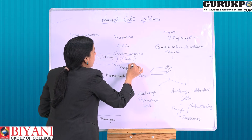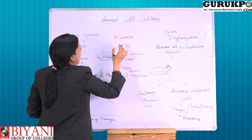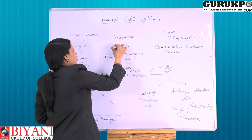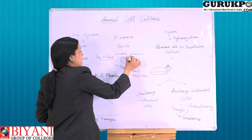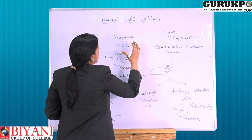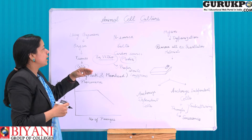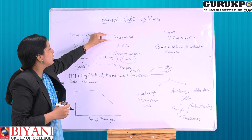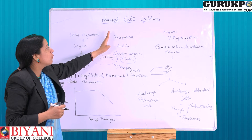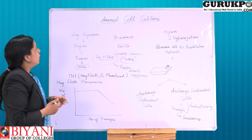Other than sterile conditions, we have to provide a proper media for animal cell culture. The major constituents of the animal cell culture media are: nitrogen sources, which are growth factors and proteins; salts, which maintain osmolarity; and carbon sources, which provide energy to the cells for growth. Other than these, growth factors are also provided in the media. Growth factors initiate the growth of the cells.